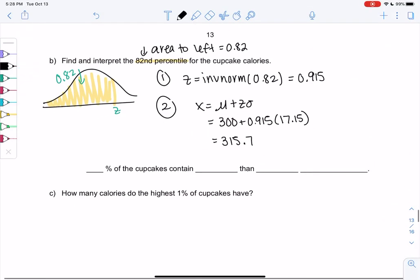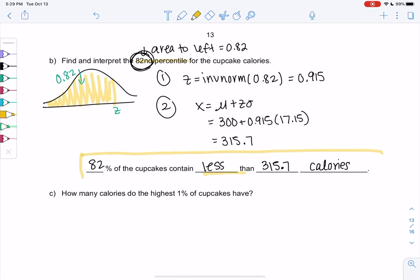So what does this tell us? We've interpreted these before. 82% of cupcakes, and then we learn percentiles are always less than 315.7 calories. And that's our interpretation. So we'll finish up this in the next video. It's kind of a long example anyway, so why not split it up into two videos?